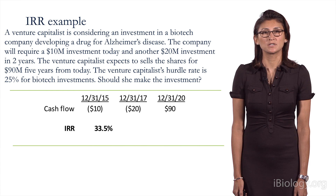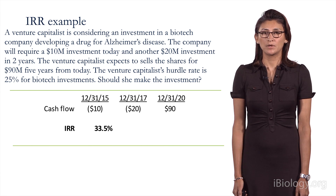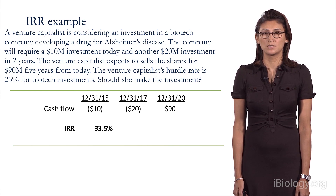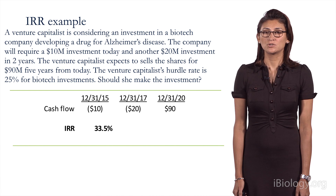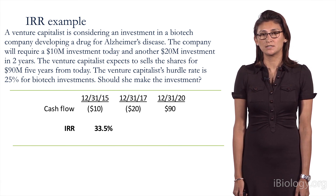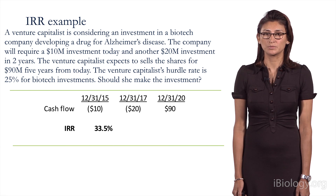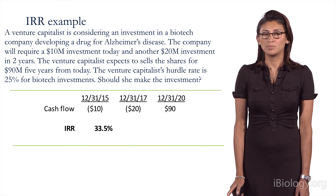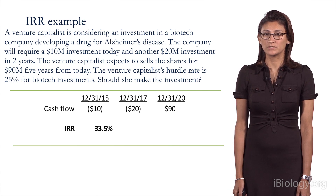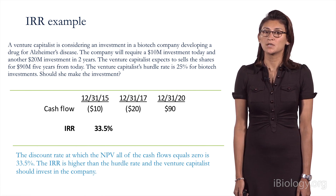In this example, a venture capitalist is considering an investment in a biotech company developing a drug for Alzheimer's. The company would require a $10 million investment today and another $20 million investment in two years. The VC expects to sell the shares for $90 million five years from today. The VC's hurdle rate is 25% for biotech investments, so should they make the investment? The IRR at which the NPV would equal zero is 33.5%. Since 33.5% is greater than the VC's hurdle rate, they should make this investment.